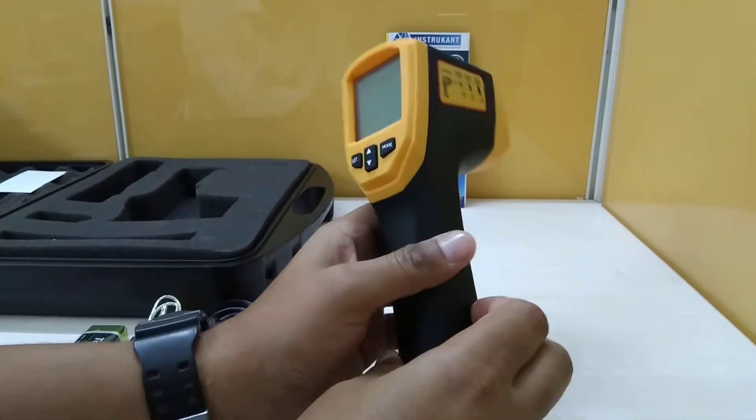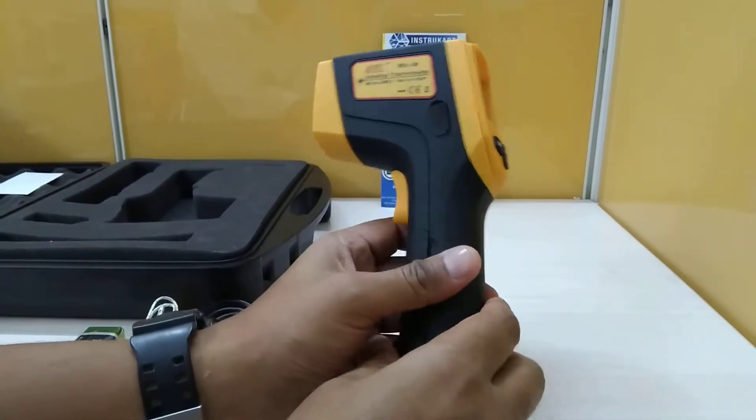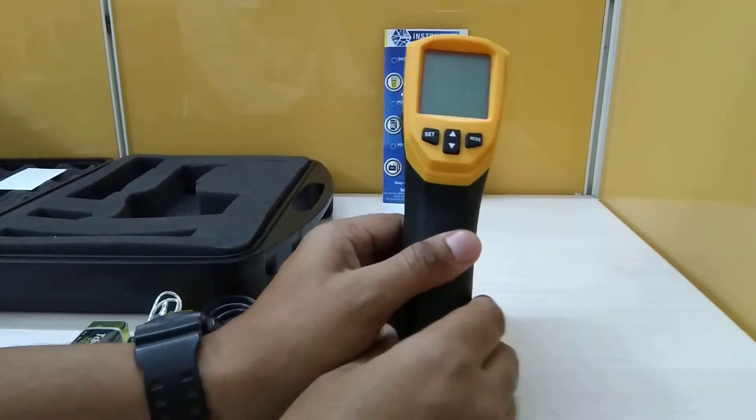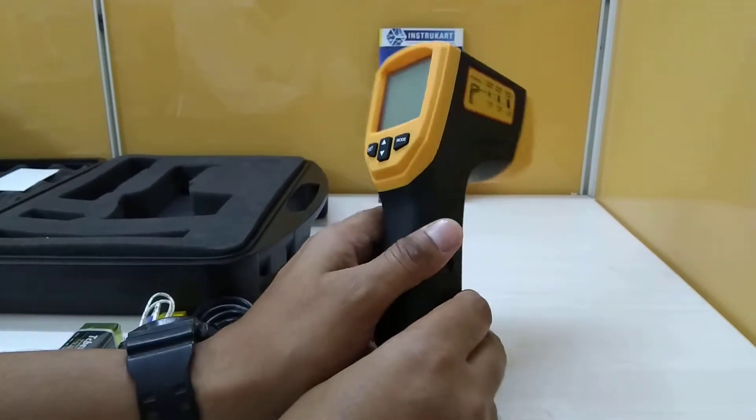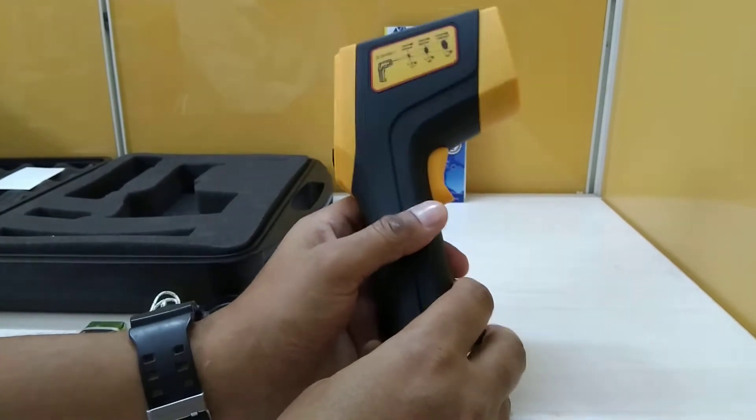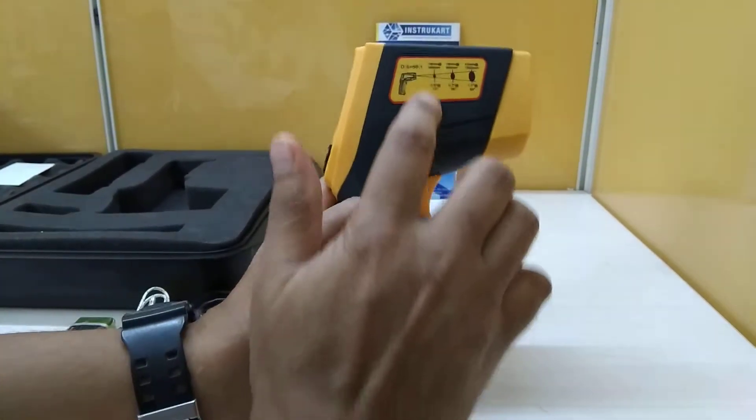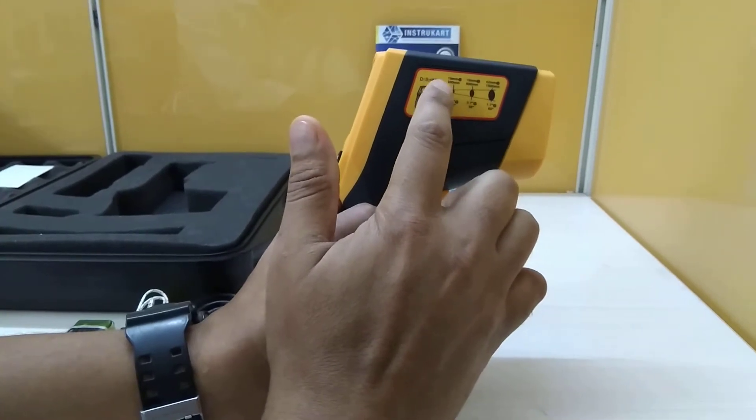This is a high temperature infrared thermometer which ranges from minus 50 to 2280 degrees Celsius. It means you can sense this for higher temperatures also, and as you can see, this has got a distance to spot ratio of 50 is to 1.